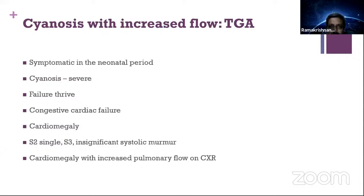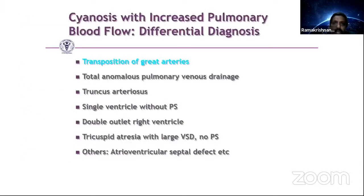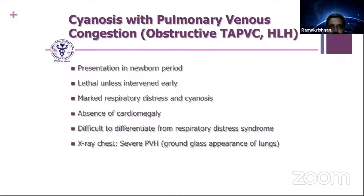For increased pulmonary blood flow situations: the most common condition we see in the neonatal age group is TGA. They are generally symptomatic in the neonatal age group, with severe cyanosis, failure to thrive, heart failure, cardiomegaly, single S2 with S3, and insignificant systolic murmur. Cardiomegaly with increased pulmonary blood flow on X-ray will be present. Other increased pulmonary blood flow conditions: TAPVC, truncus arteriosus, double outlet right ventricle without PS, single ventricle without PS. Obstructive TAPVC and HLHS can present with pulmonary congestion — generally in the newborn period, lethal unless intervened early, with marked respiratory distress and cyanosis, difficult to differentiate from respiratory distress syndrome, with ground glass appearance on X-ray.